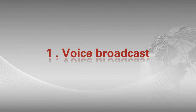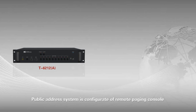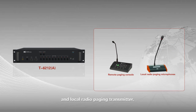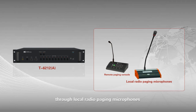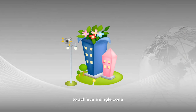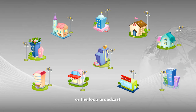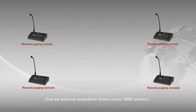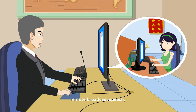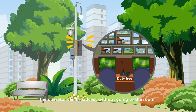1. Voice broadcast. The public address system is configured with a remote paging console and local radio paging transmitter. Through local radio paging microphones or remote paging console, achieve single zone, loop broadcast, or broadcast notice. Can be placed anywhere up to 1000 meters from the room for remote broadcast speech. The operator can broadcast without going to the room.